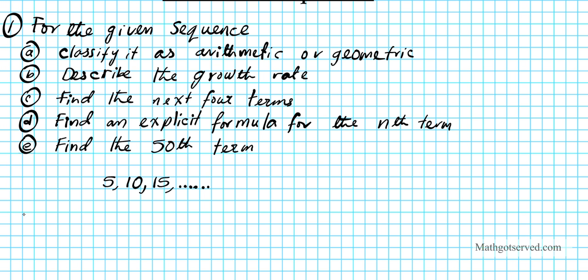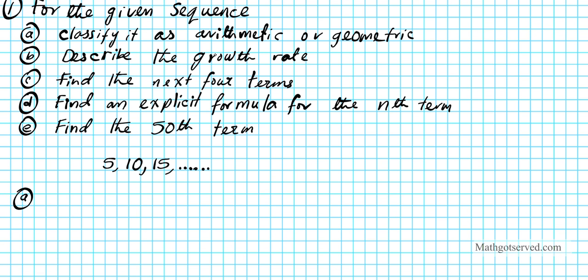Let's start with part A — classify it as arithmetic or geometric. Remember: arithmetic involves addition or subtraction, while geometric involves multiplication or division. If you keep adding, it's arithmetic; if you keep multiplying, it's geometric.